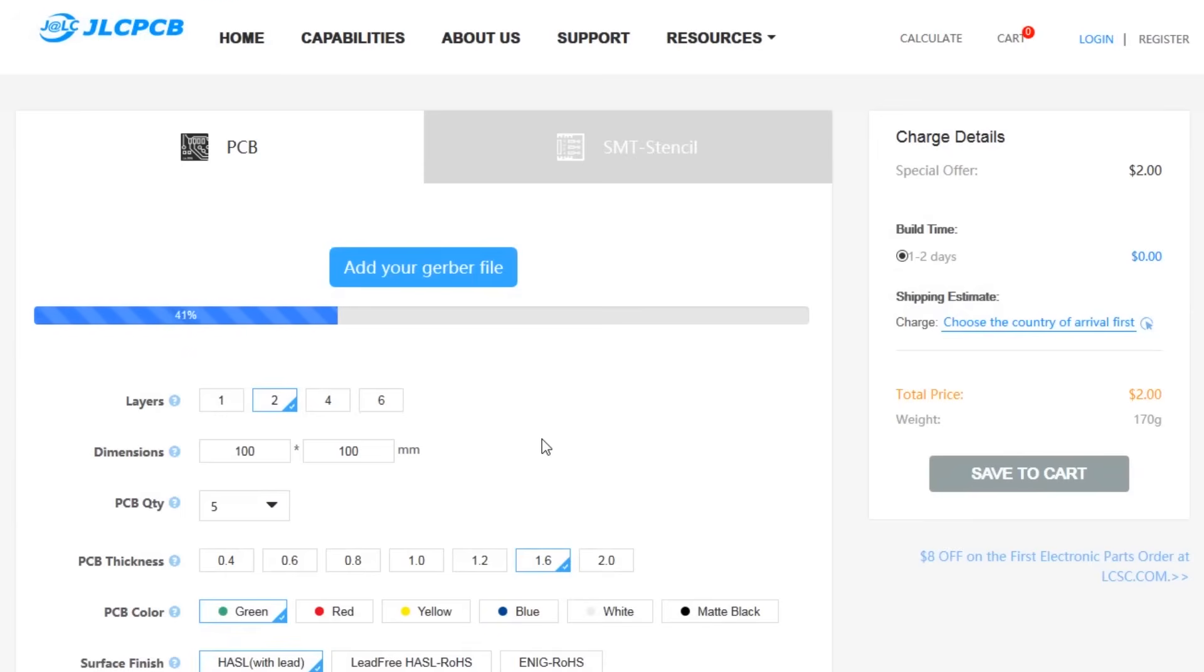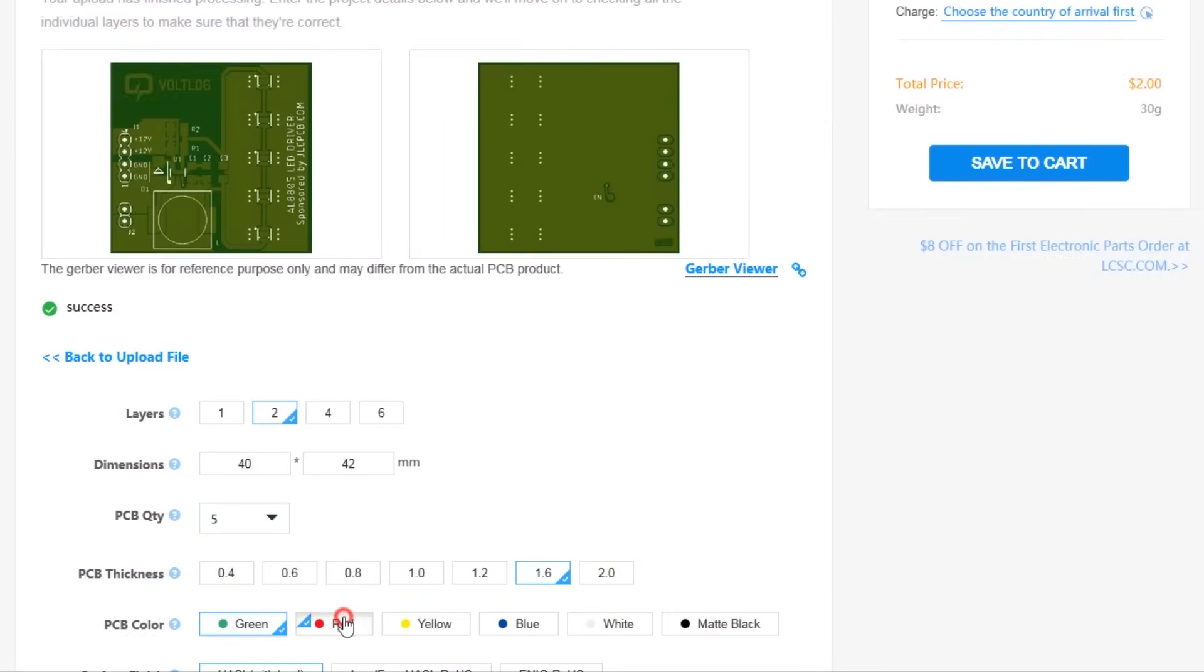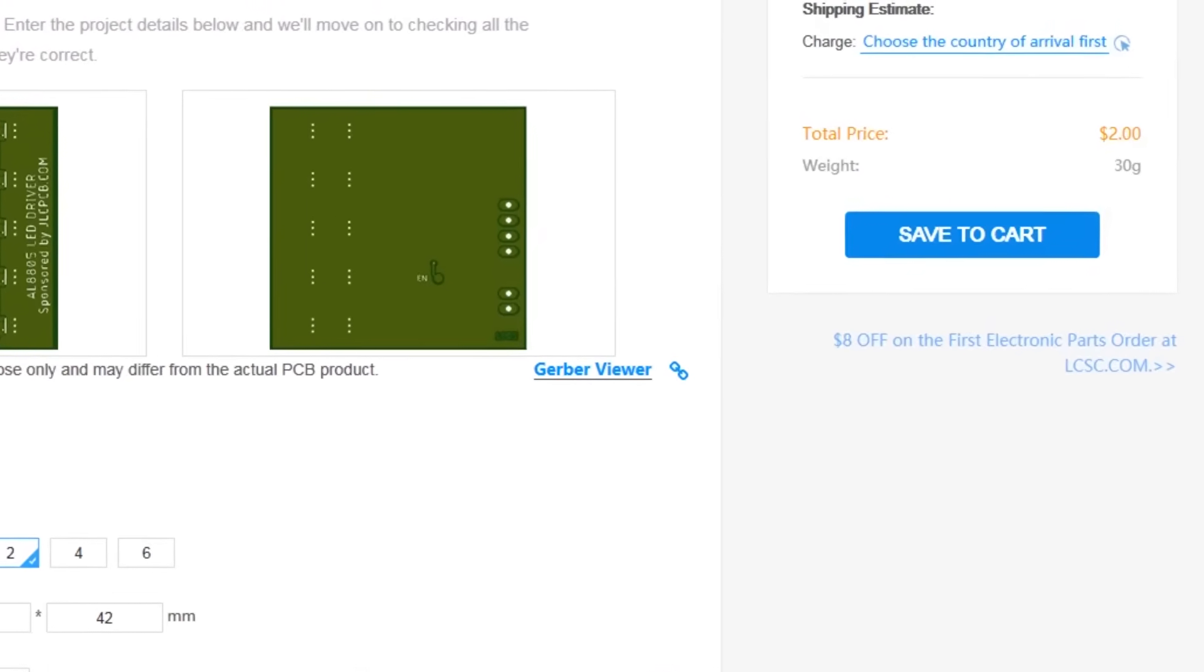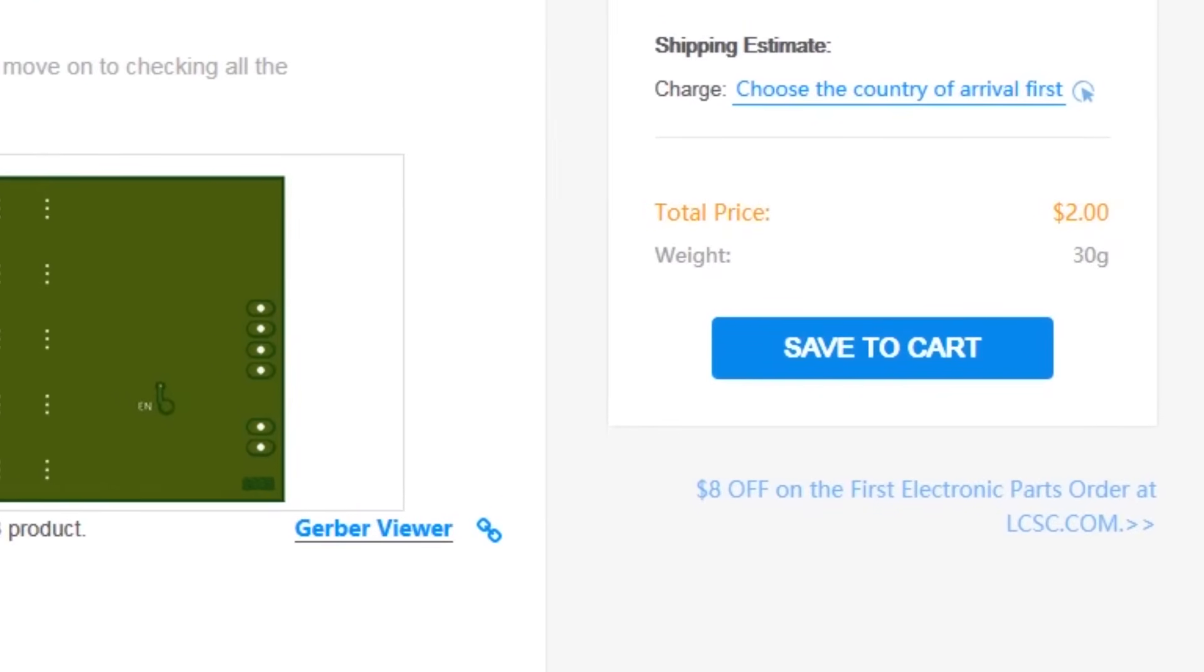This video is sponsored by JLCPCB.com, who recently upgraded their offer so you now get 24 hours turnaround time and you can choose any solder mask color for the same price of just $2. Prototyping is now faster and cheaper so it's definitely worth checking them out.